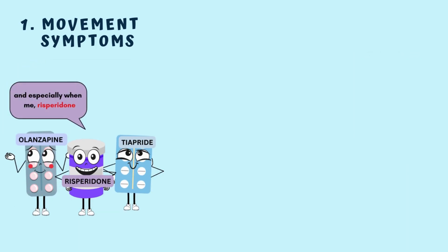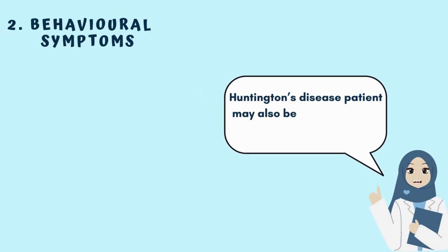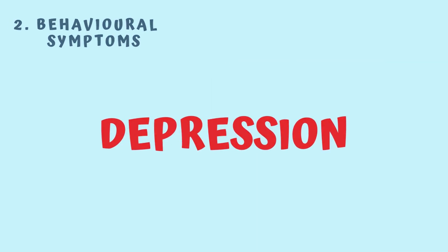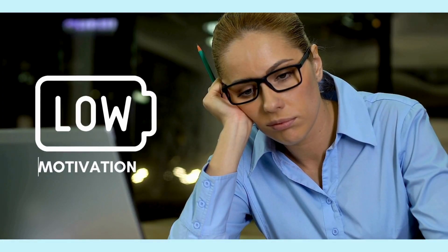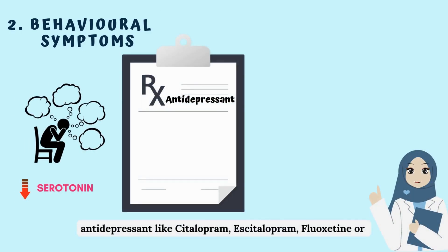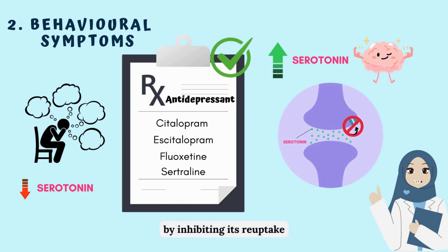With risperidone specifically, breast enlargement is a notable side effect to be aware of. Huntington's disease patients may also present with behavioural disturbances, most commonly depression causing low motivation. As depression is associated with low serotonin, antidepressants like citalopram, escitalopram, fluoxetine or sertraline can be given. They increase serotonin levels in the brain by inhibiting its reuptake.